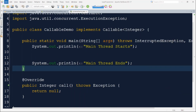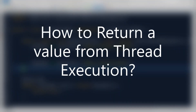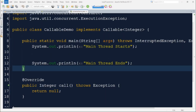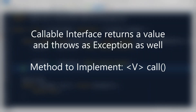Now let's move to the next question: what if we want to return something from the thread execution? In Java 1.5, an interface called Callable was added in the java.util.concurrent package. This was added to handle the shortcomings present in the Runnable interface. It can return any type of object from the thread execution, and the method we need to override is called the call method instead of the run method. Let me show you how we can implement business logic using Callable and then discuss a couple of ways to utilize the Callable implementation.